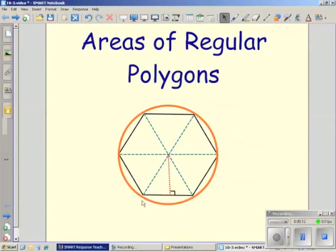The center of a regular polygon is the center of the circumscribed circle. A radius is the distance from the center to a vertex. And this will be a new vocabulary word.